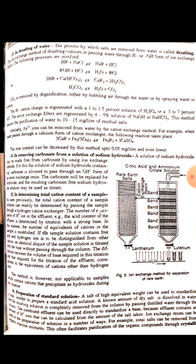Similarly, ferric ions can be removed from water by the cation exchange method. For example, when water passes through a calcium form of cation exchanger, the following reaction takes place in which the calcium ions combine with sulfate to form calcium sulfate and ferric ions enter the exchanger. The iron content can be decreased by this method up to 0.05 milligrams per liter.